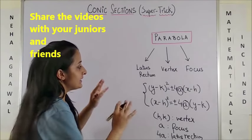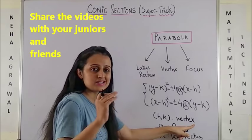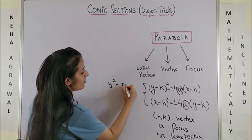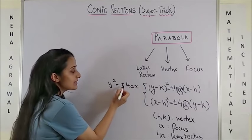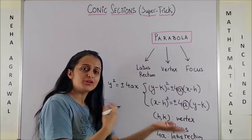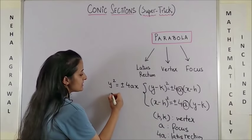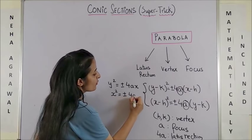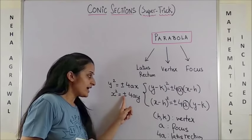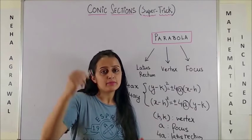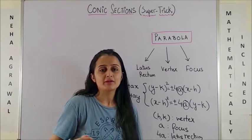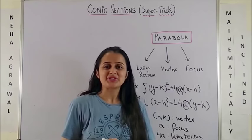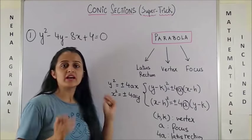The standard equation when the vertex is (0, 0) is y² = ±4ax — the sign decides whether it is a right-handed or left-handed parabola. Similarly, when hk is (0, 0) the equation is x² = ±4ay — here the sign decides whether it's an upward or downward parabola. Now let me take you straight to the question.